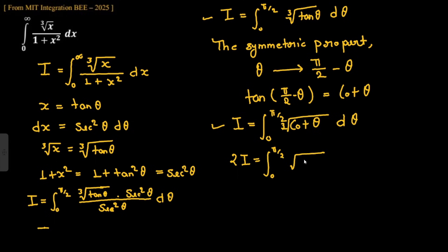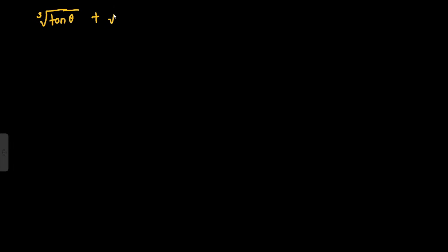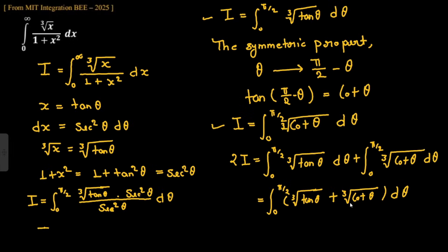Adding the two integrals: 2I = ∫₀^(π/2) cube root(tan θ) dθ + ∫₀^(π/2) cube root(cot θ) dθ, which combines to 2I = ∫₀^(π/2) [cube root(tan θ) + cube root(cot θ)] dθ.